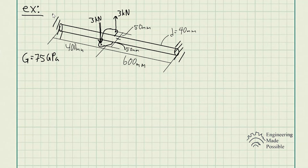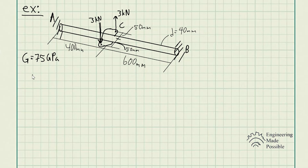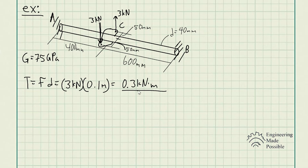We have point A, point B, and point C, with all the necessary dimensions. The diameter of the shaft is 40 millimeters. The couple moment is applied at point C, which is 400 millimeters from point A, and from C to B is 600 millimeters. The torque due to the couple moment is 0.3 kilonewton meters.